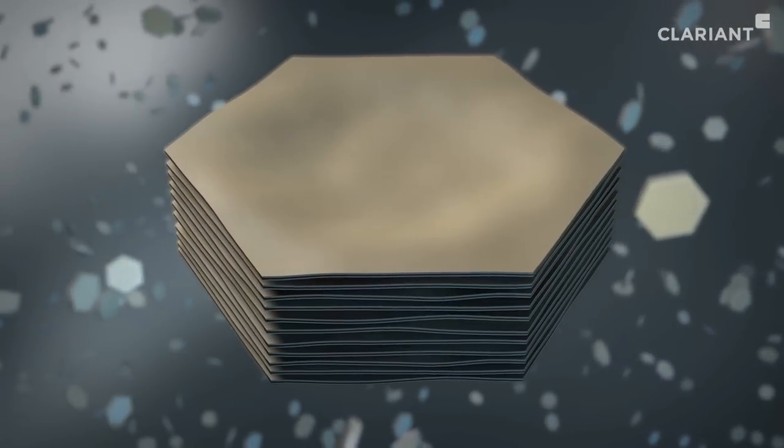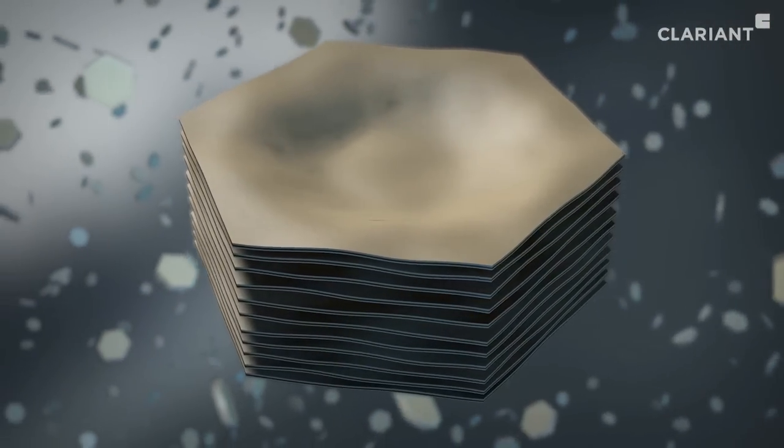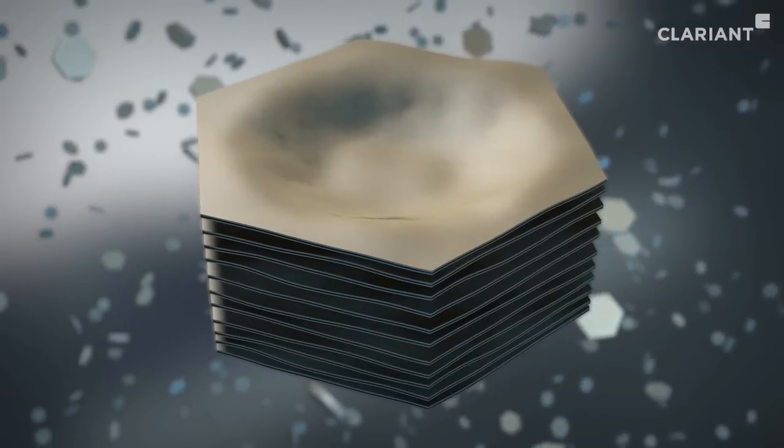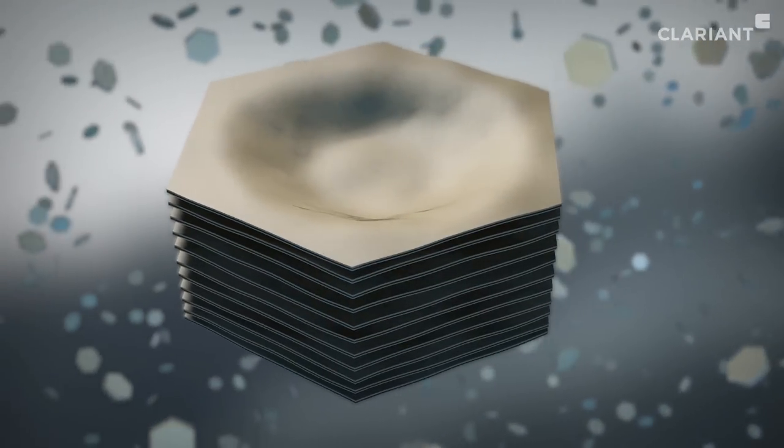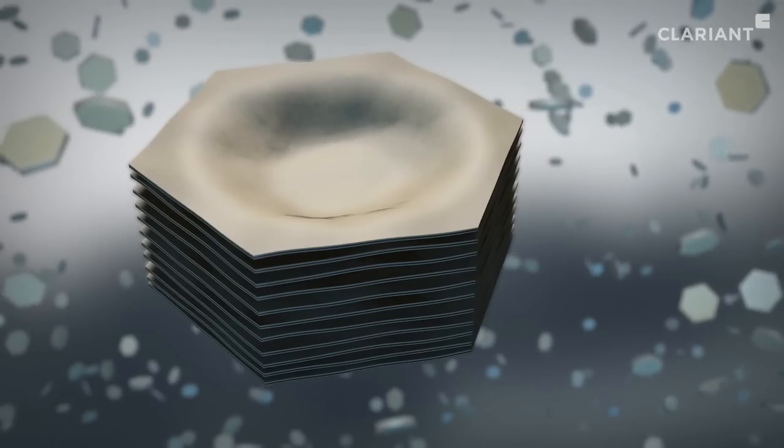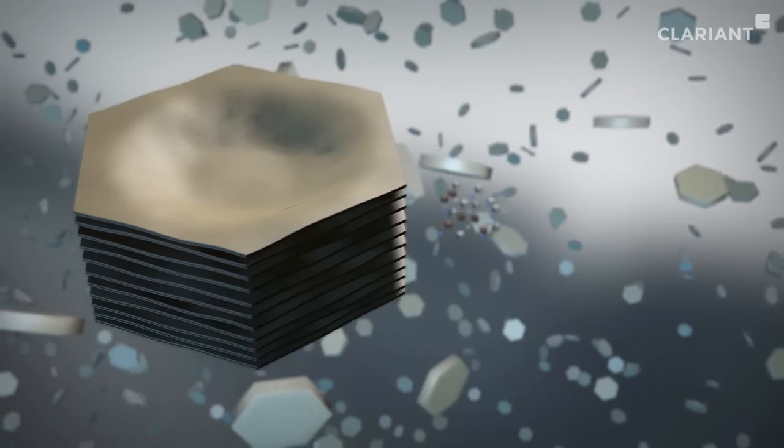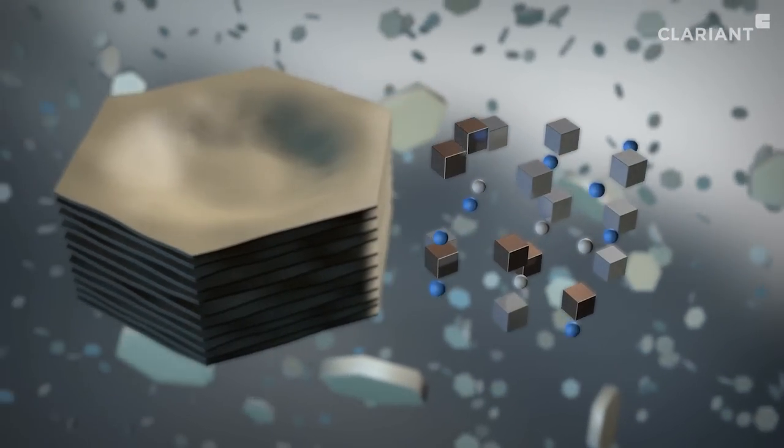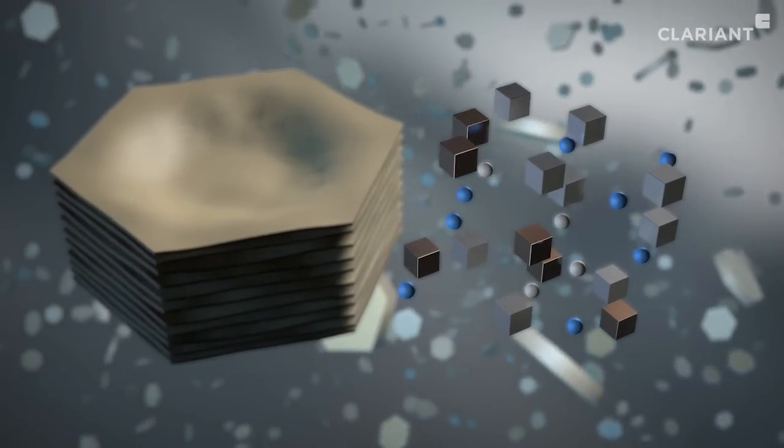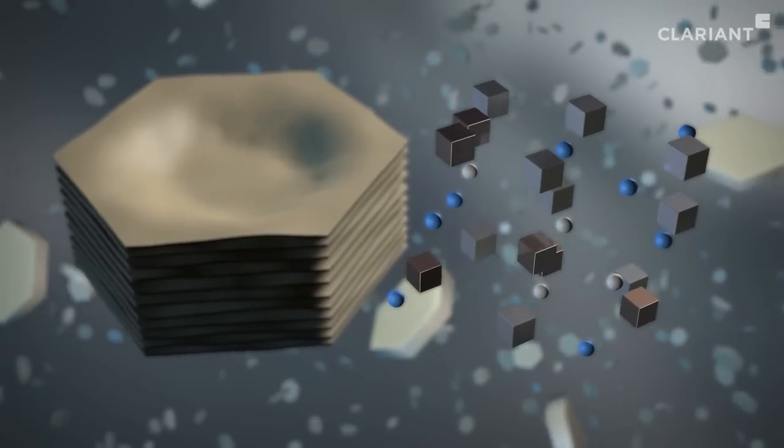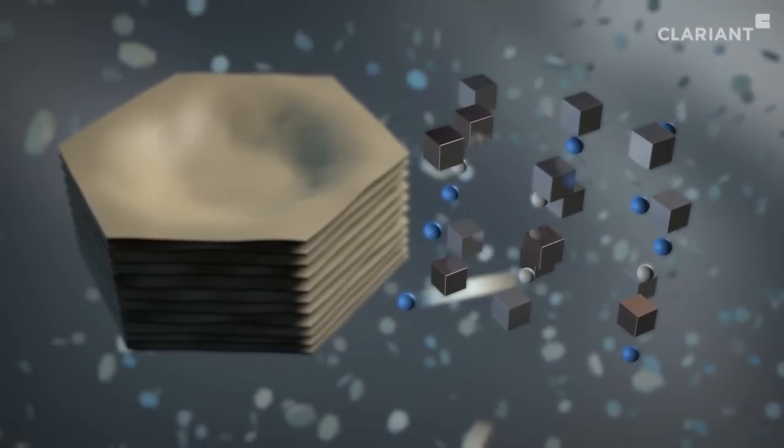In this way, the surface area of the material increases about five-fold to 300 square meters per gram. This large surface is required to absorb all the undesired substances and impurities from the oil. The metal ions dissolved in the water are obtained as a by-product and are used for phosphate precipitation in wastewater treatment plants.